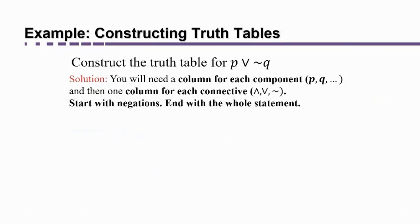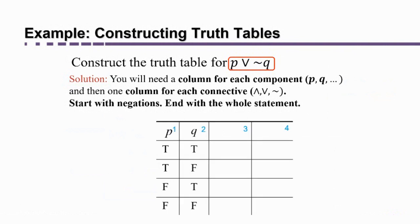Now then you have to decide on the headings that go along the top of the truth table. So for example, if we wanted to construct a truth table for P or not Q, first of all, you're going to need a column for each component, the P and the Q as we saw in the previous slide. But then you're also going to need a column where you analyze each of the connectives, applying the rule for and or negation, depending on which one you're analyzing.